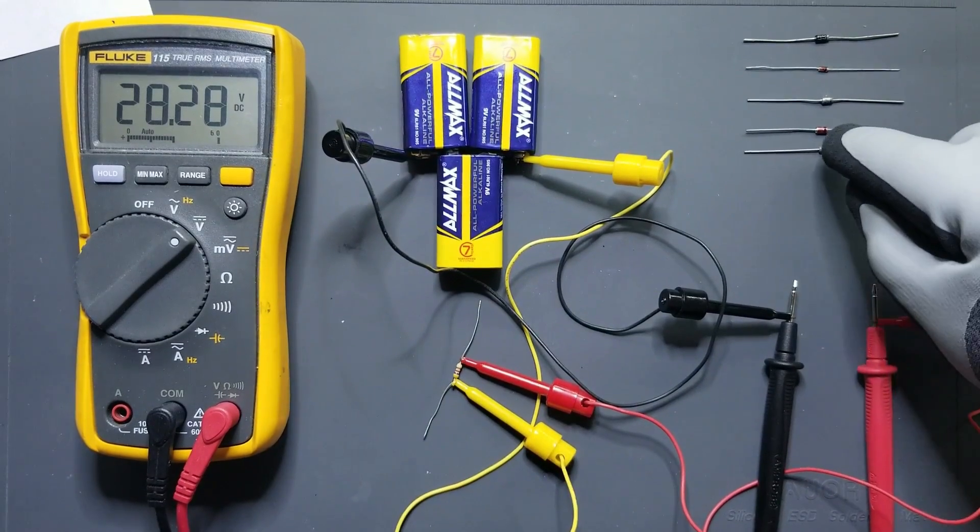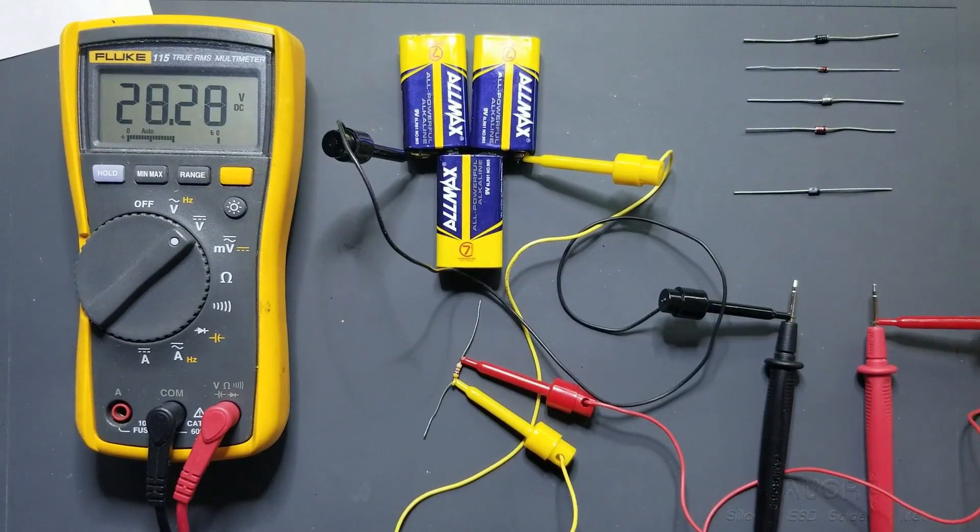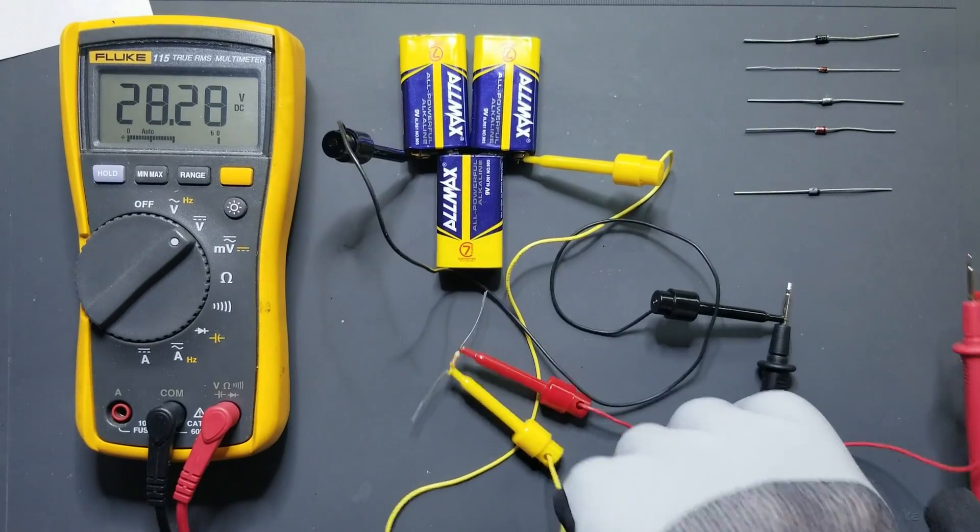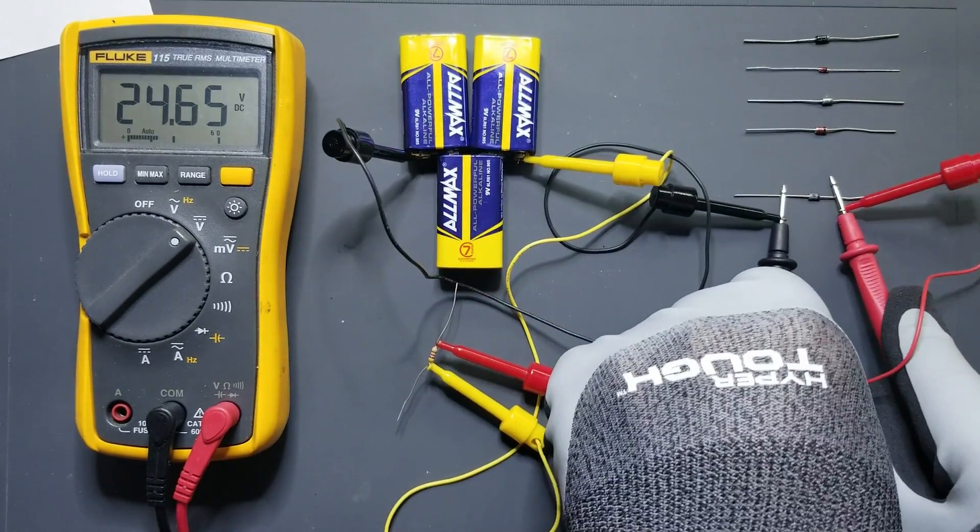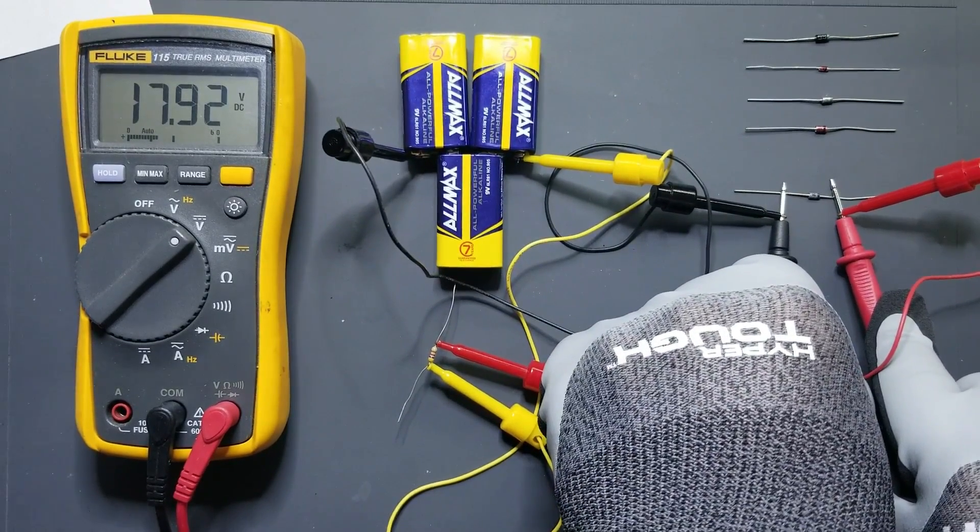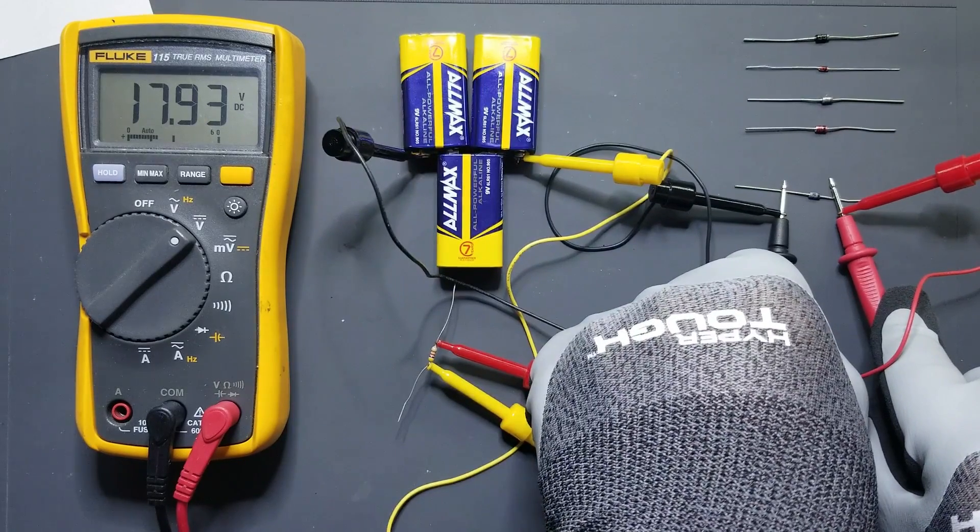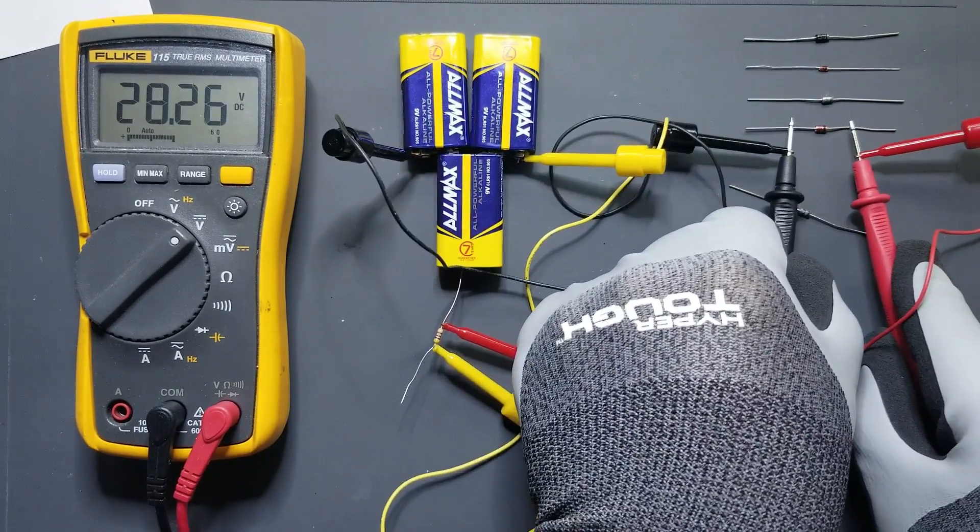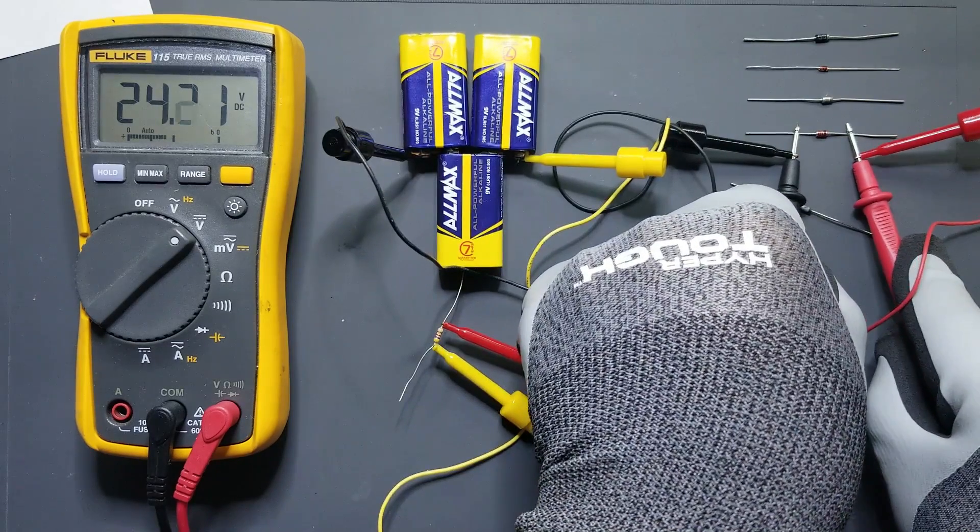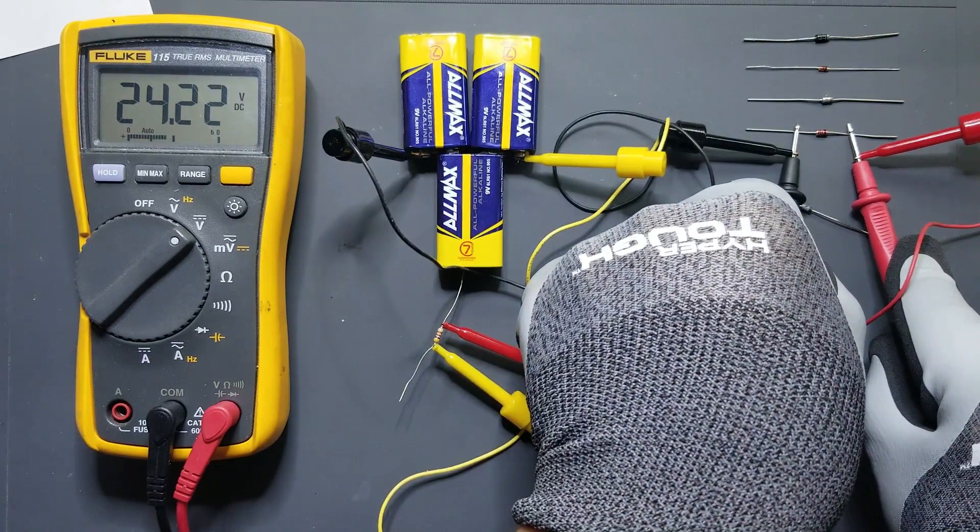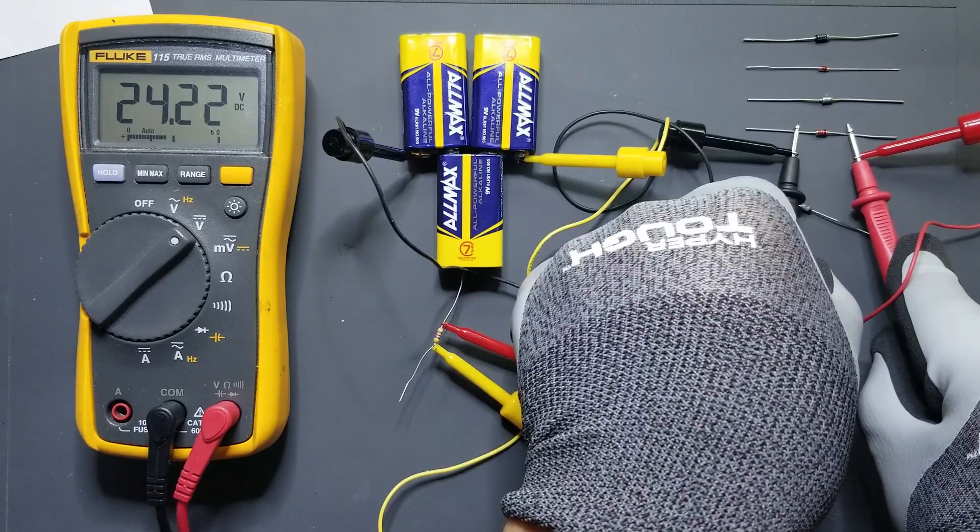So let's test this one right here. This one is giving us approximately 18 volts, so we'll call that an 18 volt Zener diode. Let's test this one. This has given us approximately 24 volts, so that's a 24 volt Zener.